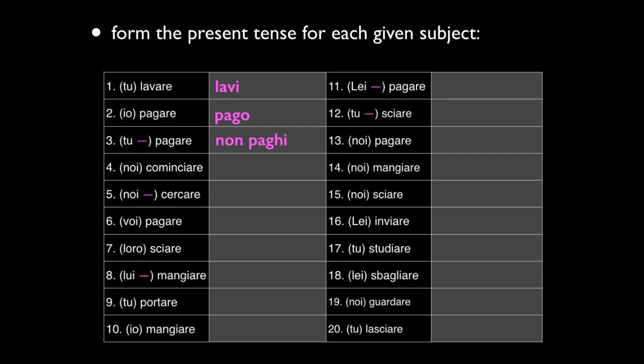Number three is NON PAGHI — that's one where you add the H to conserve the G sound of PAGARE. Number four: you don't have to double the I — NOI COMINCIAMO with COMINCIARE. Number five is NOI NON CERCHIAMO — again, you add the H to conserve that hard C sound. Number six is VOI PAGATE.